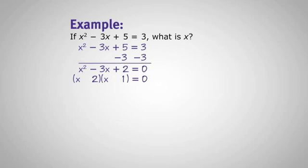So our binomial reads quantity of x minus 2 times the quantity of x minus 1 equals 0. Our final step is to set each one of those binomials equal to 0 and then solve for x.